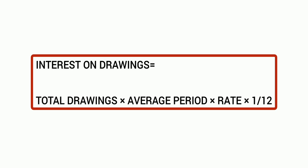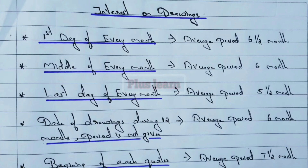Arun is a partner in ABC company. He withdraws in the middle of every month — in January on the 15th, in February on the 14th.